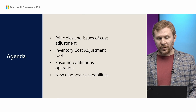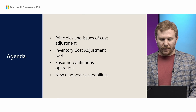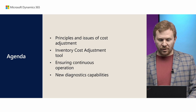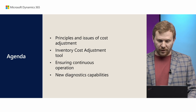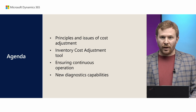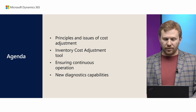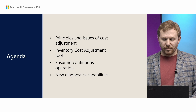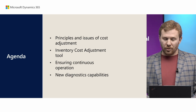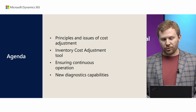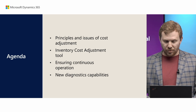First, I'll recall what the cost adjustment is for and name the main issues our customers are facing. Then we'll get familiar with the inventory cost adjustment tool and how to ensure uninterrupted adjustment of items, production, and assembly orders. Finally, we'll look at what actions you might want to take in case something goes wrong. So let's start.